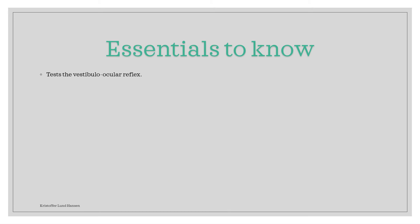Lastly, we will repeat some essential knowledge and mention some other essential things. The examination is done to test the vestibular ocular reflex, which is basically a reflex that stabilizes the gaze when you move your head around. Head impulse is a part of the HINTS exam. The HINTS exam is an examination where you perform head impulse, nystagmus, and skew deviation tests.